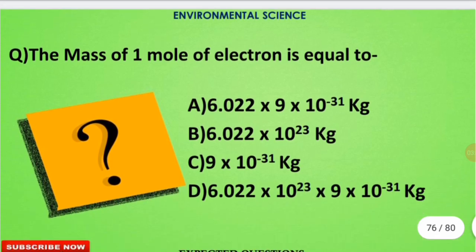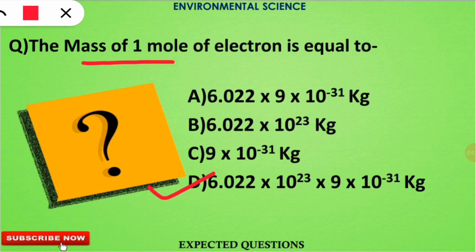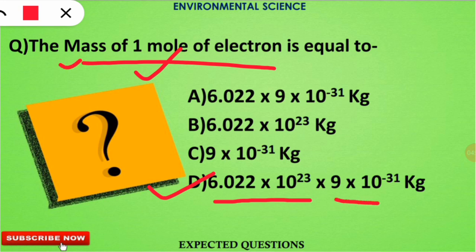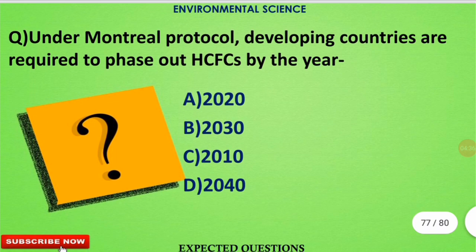The next question is very simple yet conceptual: the mass of one mole of electrons is equal to how much? The correct option is option D. One mole means 6.022 × 10²³ particles, and the mass of one electron is 9 × 10⁻³¹ kg. Multiplying these gives the total mass of one mole of electrons.